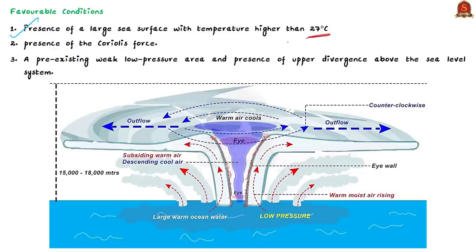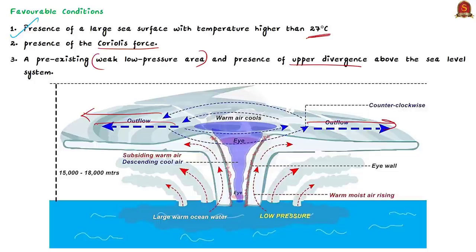Some of the conditions that favor the formation of tropical cyclones are: the presence of a large sea surface with temperature higher than 27 degrees Celsius, the presence of the Coriolis force, a pre-existing weak low pressure area or a low-level cyclonic circulation, and the presence of upper divergence above the sea level system. These conditions favor the formation of tropical cyclones.